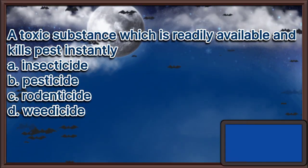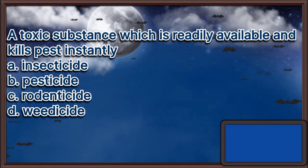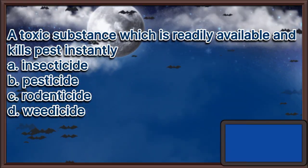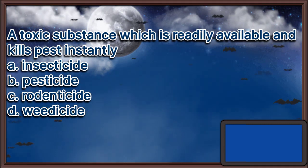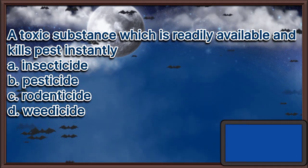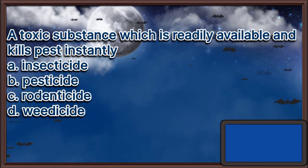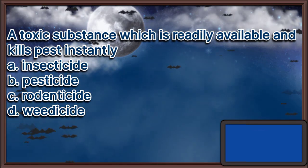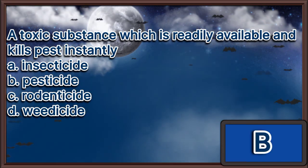A toxic substance, which is readily available and kills pests instantly. A. Insecticide. B. Pesticide. C. Rodenticide. D. Weedicide. The answer is letter B.